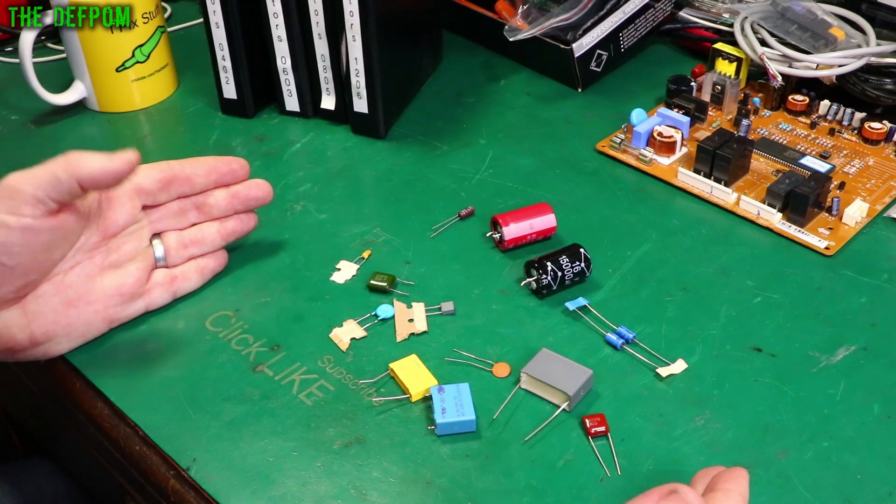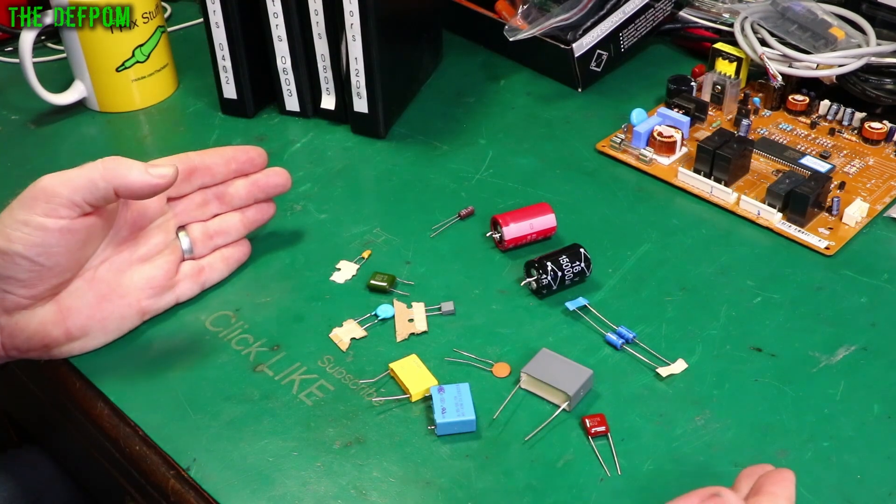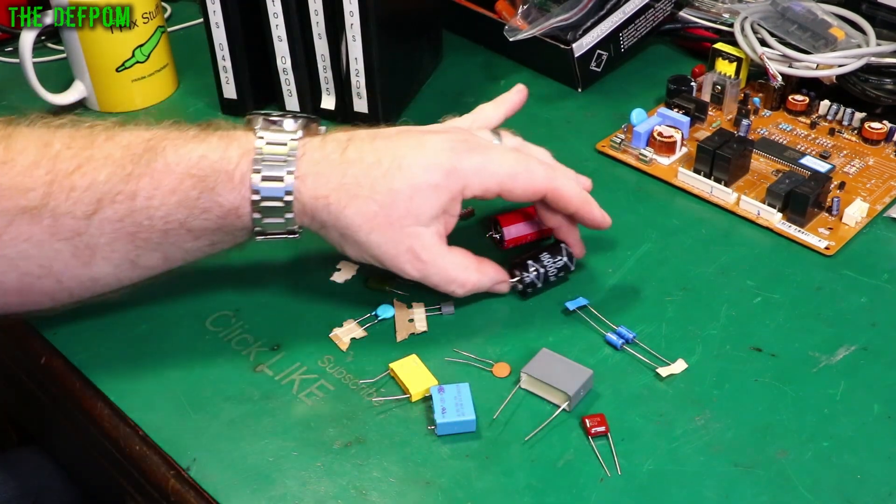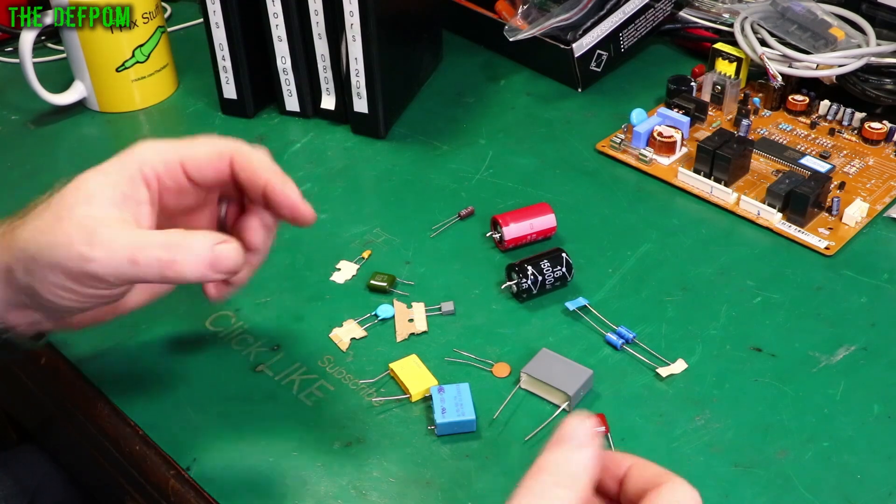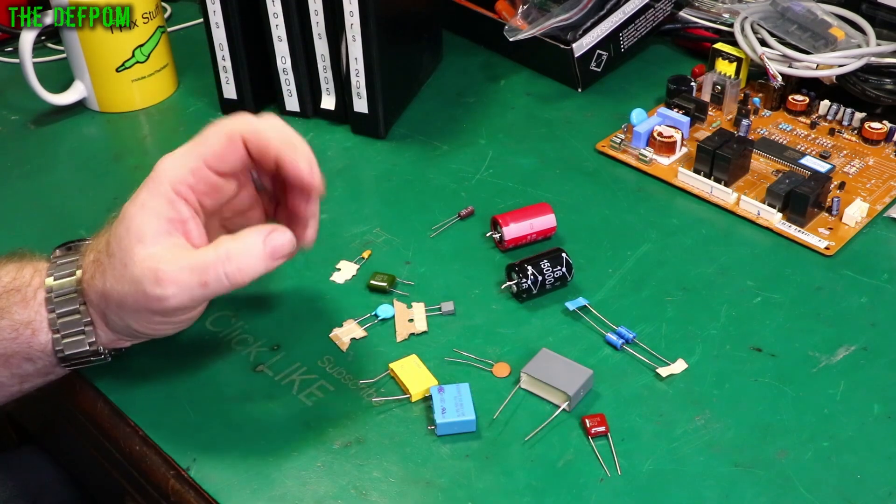So a capacitor is an energy storage device, a bit like a battery, but in much smaller capacities generally, unless you have a super capacitor, which basically are very low voltage but really high capacitance in a small package.